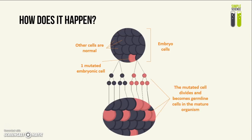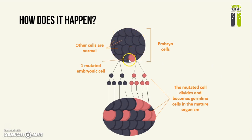How does it happen? During the embryonic development of an organism, a mutation would occur in one of the cells, as illustrated here, while all of the other cells are normal. Then this mutated cell divides by mitosis, and they become germline cells in the mature organism.